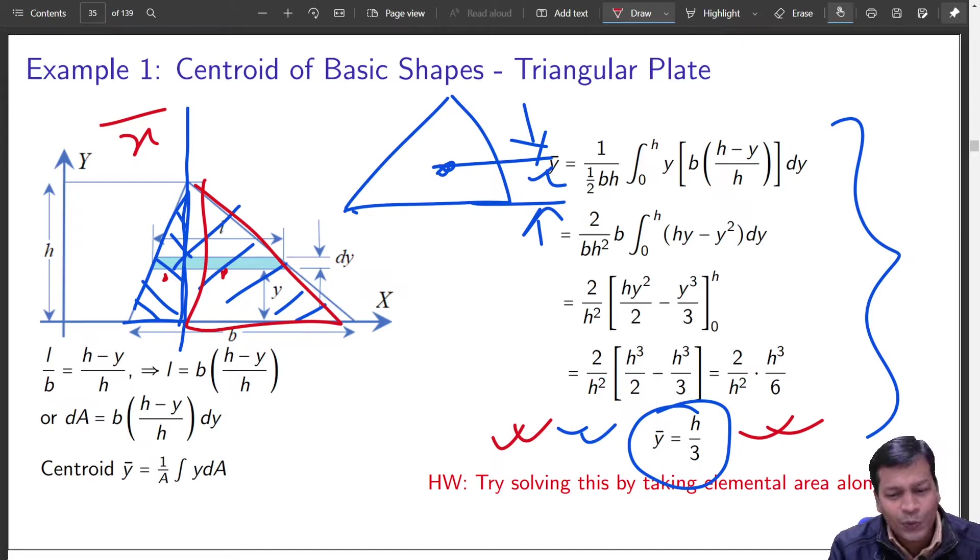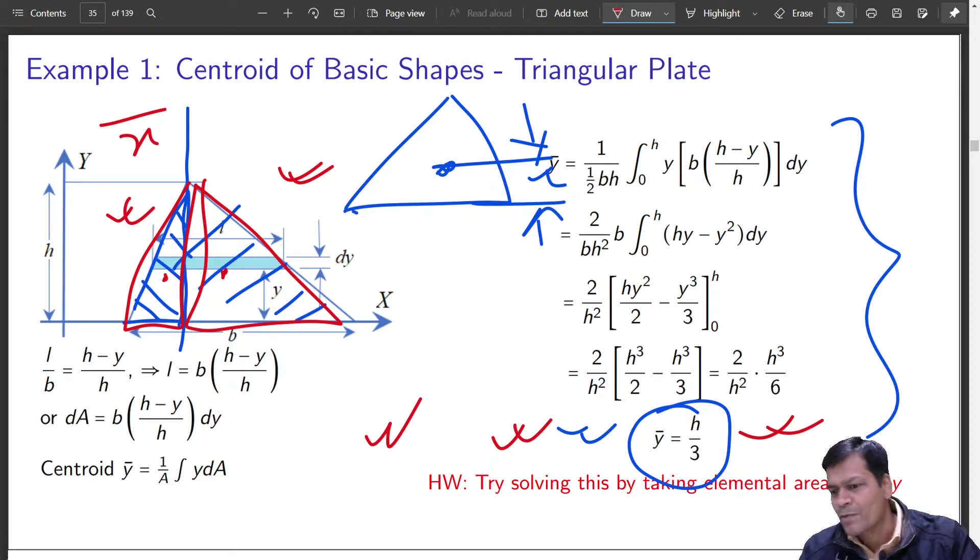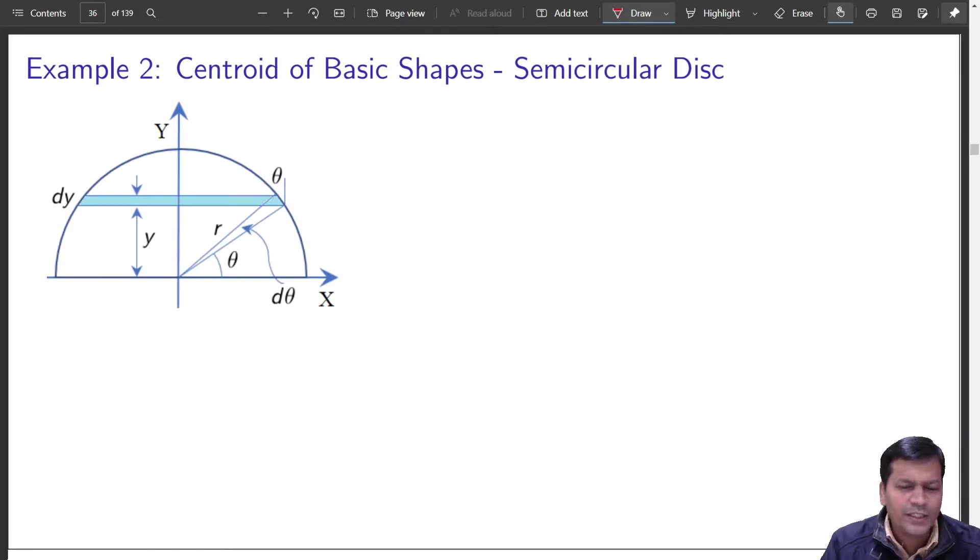You need not to do integral again taking elemental strip doing integration and not just integration integrating it in two pieces. That is not required. So x bar can be found out using that technique. So moving ahead, we have another problem that is waiting that is centroid of basic shape another one that is semi circular disc.